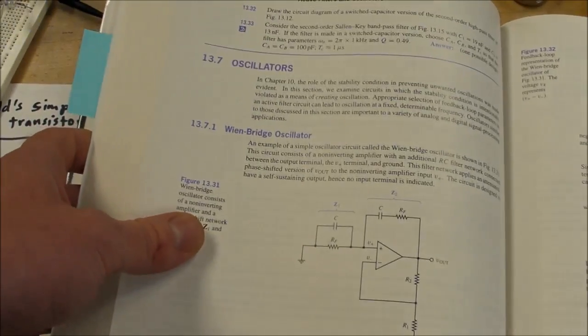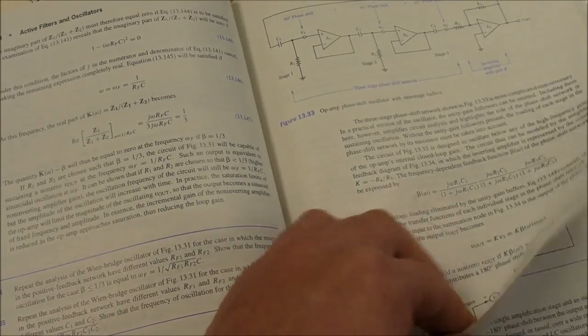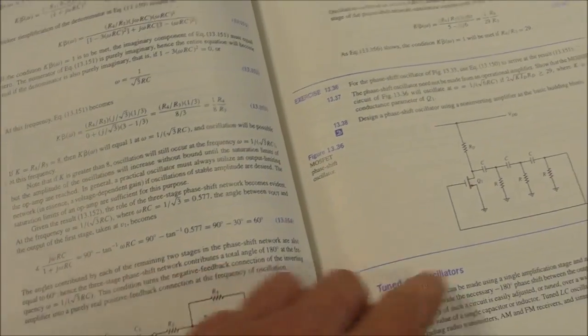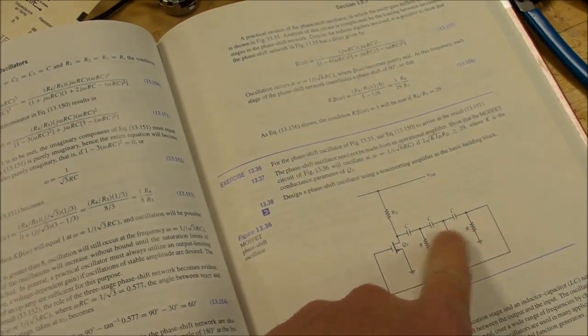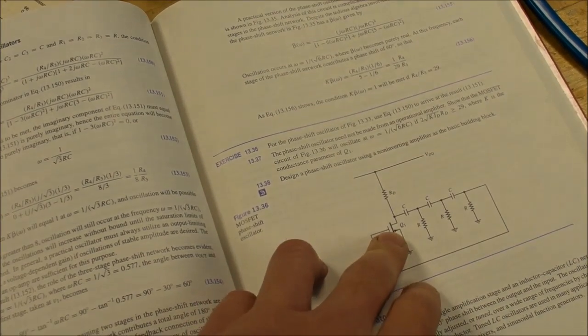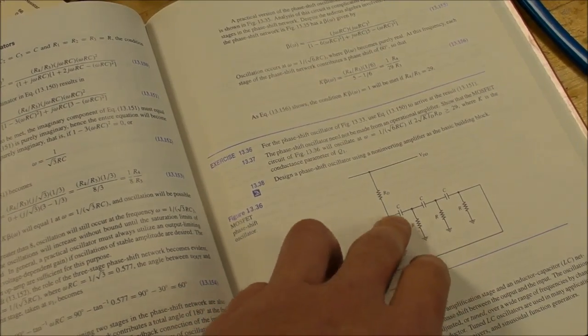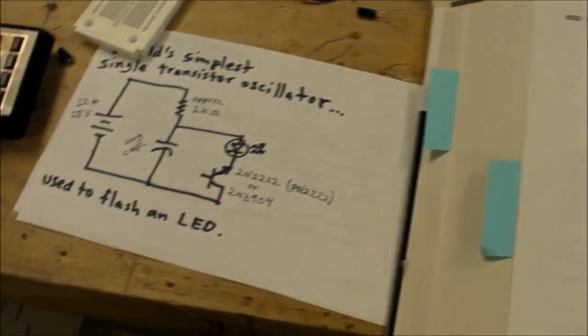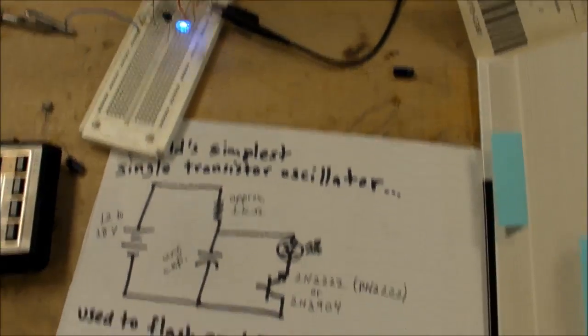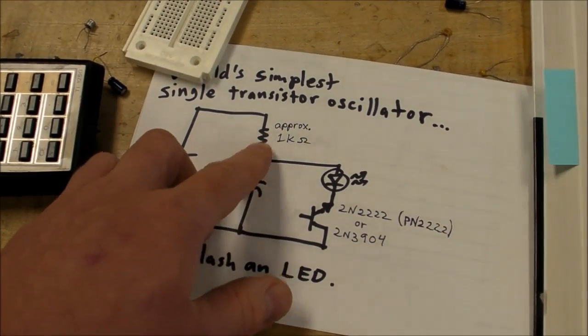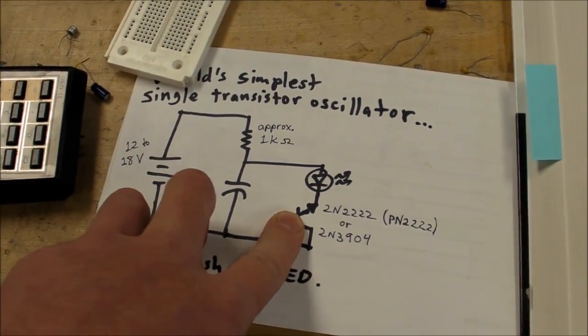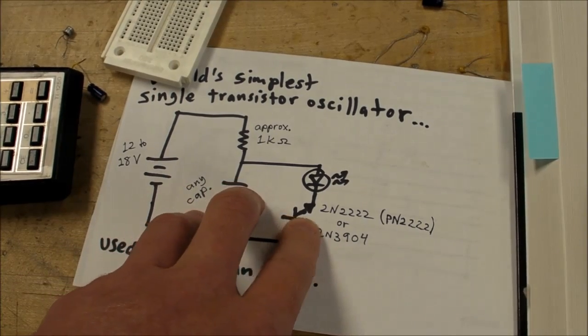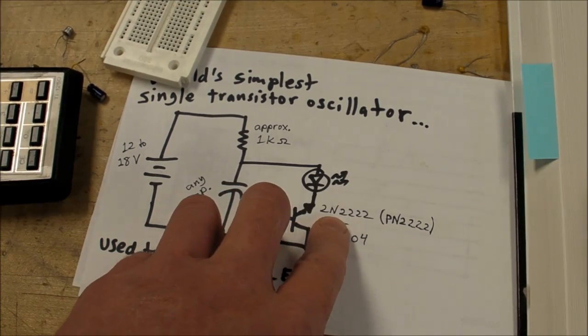And of course you learn about oscillators like the Wien bridge oscillator, Hartley and Colpitts, and phase shift oscillators - you know, there's a nice single transistor oscillator, but you got all these other components here. I wanted something absolutely simple, just like this one - all you need is resistor, capacitor, reverse bias BJT.